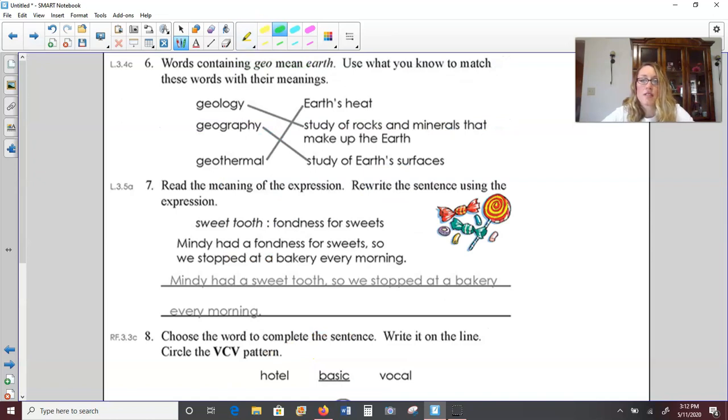Number five, choose an adjective or adverb to complete each sentence. We have best, more better, and better. Dairy dip makes the best hot fudge sundaes because we're comparing their hot fudge sundaes to all others. And then Justin shoots better than the other boys on the basketball team. More better is not something you would say. Over to number six. Words containing geo mean earth. Geology is the study of rocks and minerals that make up the earth.